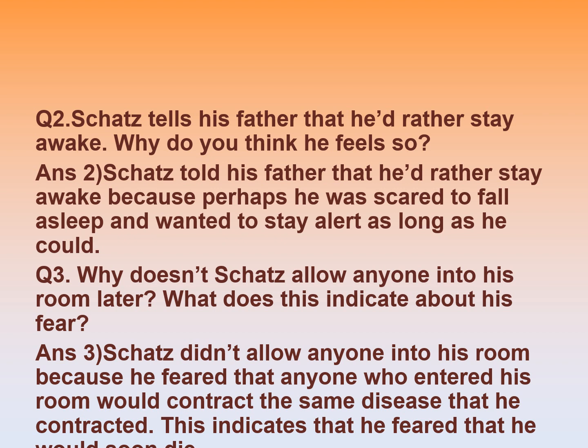Question 2: Skatz tells his father that he'd rather stay awake. Why do you think he feels so? Skatz told his father that he would rather stay awake because perhaps he was scared to fall asleep and wanted to stay alert as long as he could. Question 3: Why doesn't Skatz allow anyone into his room? What does this indicate about his fear? Skatz didn't allow anyone into his room because he feared that anyone who entered would contract the same disease. This indicates that he feared he would soon die.